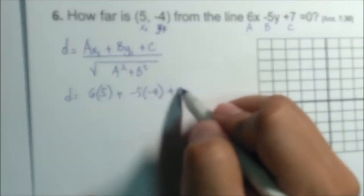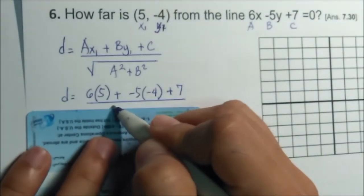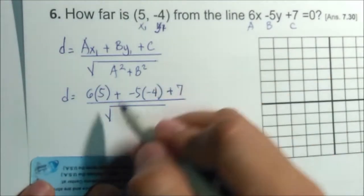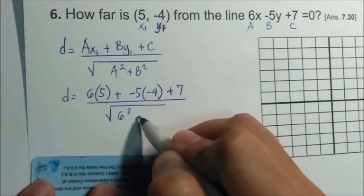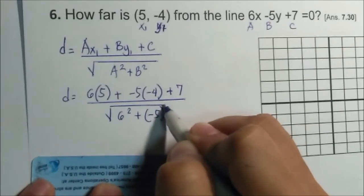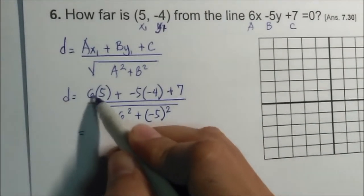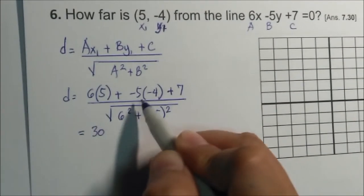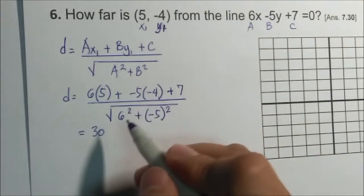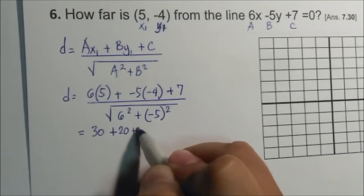Plus C, which is 7, divided by square root of 6 squared plus negative 5 squared. If you square this one, it will be positive. So 6 times 5 is 30, minus 5 times negative 4 is plus 20, plus 7.